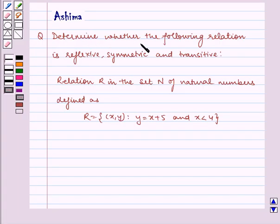Determine whether the following relation is reflexive, symmetric and transitive. Relation R in the set N of natural numbers defined as R equals (x, y) such that y equals x plus 5 and x is less than 4.